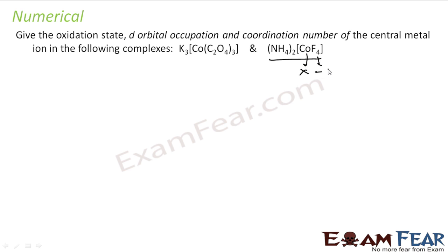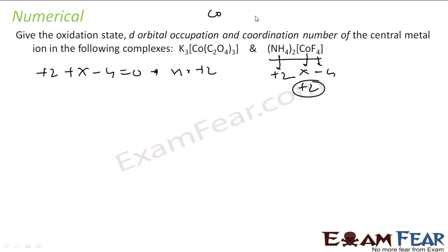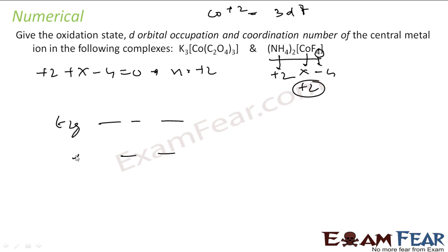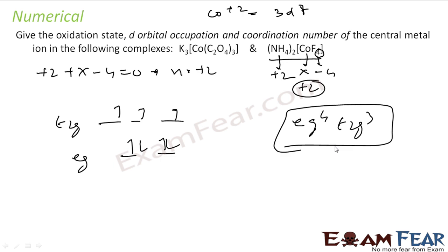For (NH₄)₂[CoF₄]: NH₄⁺ gives +2, F⁻ gives −4, so x + 2 − 4 = 0, giving Co oxidation state = +2. Co²⁺ is 3d⁷. CoF₄ is tetrahedral (coordination number 4); in tetrahedral splitting, Eg is lower and T₂g is higher. F⁻ is a weak field ligand, so no forced pairing. Filling 7 electrons: 1, 2, 3, 4 in Eg and 5, 6, 7 in T₂g. Electronic configuration: Eg⁴ T₂g³.